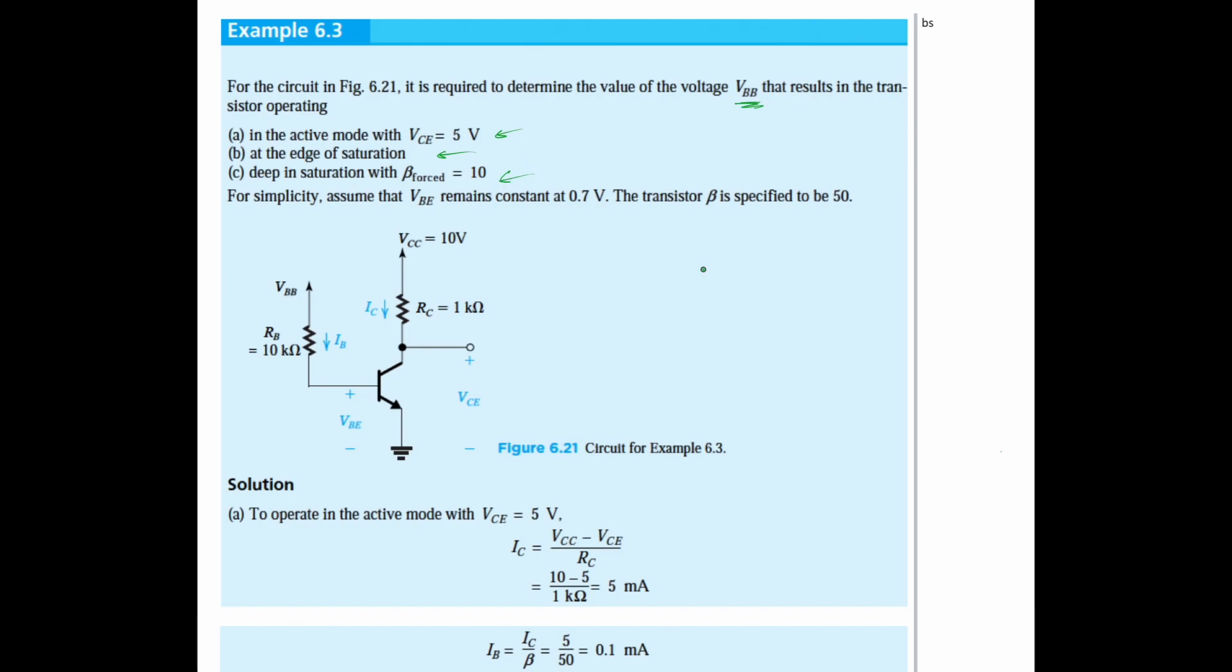We're going to make a general equation and then plug in different values for each part. For simplicity, assume that VBE remains constant at 0.7V and the transistor beta is specified to be 50.